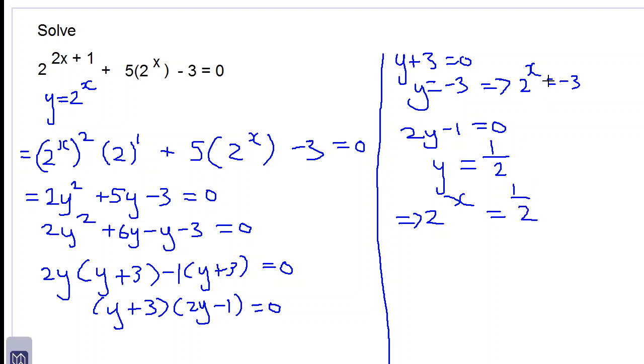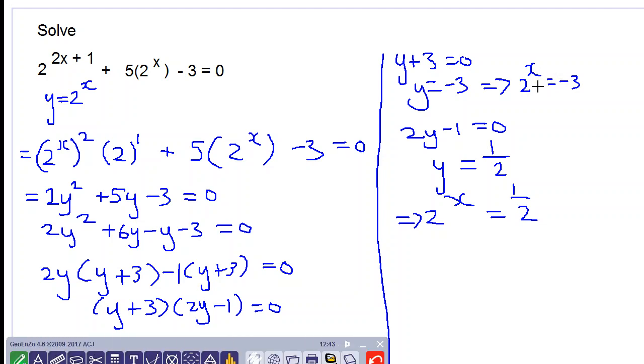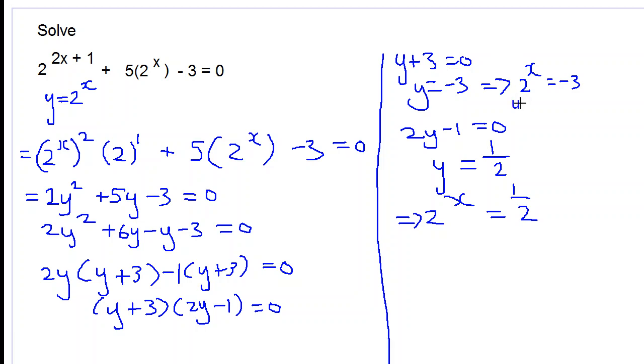So we have two cases. Y equals negative 3, which implies 2 to the x equals negative 3. And y equals 1 half, which implies 2 to the x is equal to 1 half. It is impossible for x to have any real value in the first case because 2 to the x can never give a negative number. So this is not possible, this is undefined. We eliminate this possibility. 2 to the x equal to 1 half looks like the only viable possibility, so we will take logs on both sides, log to the base 10.